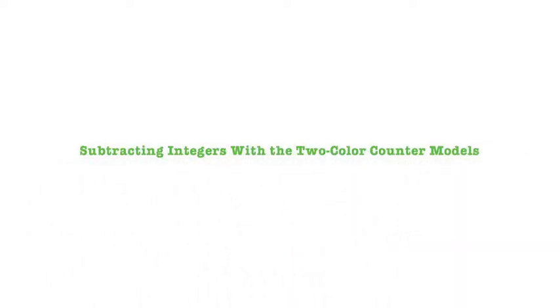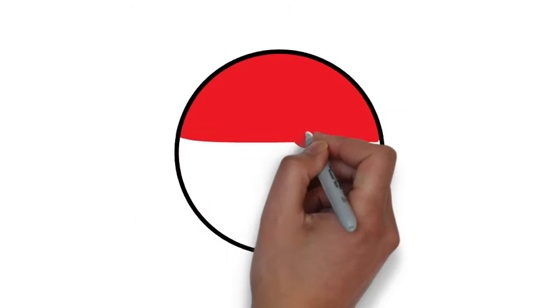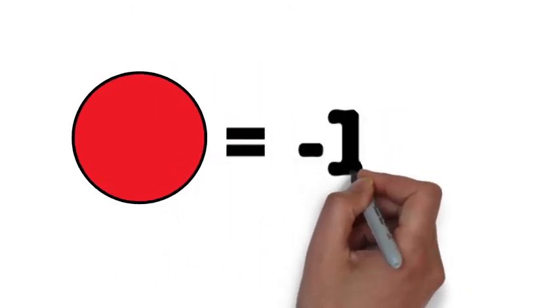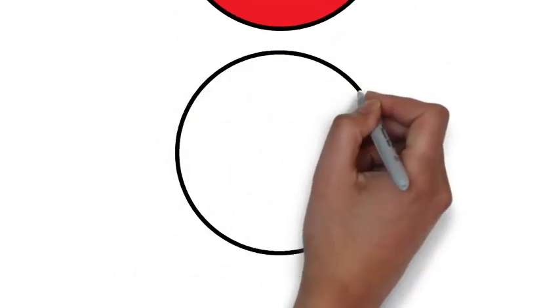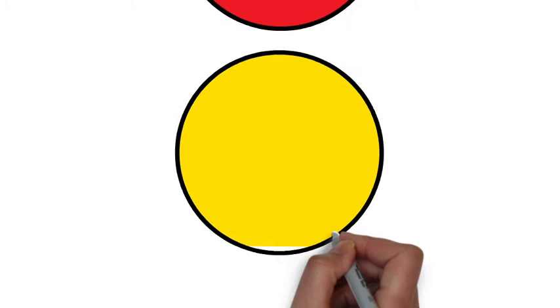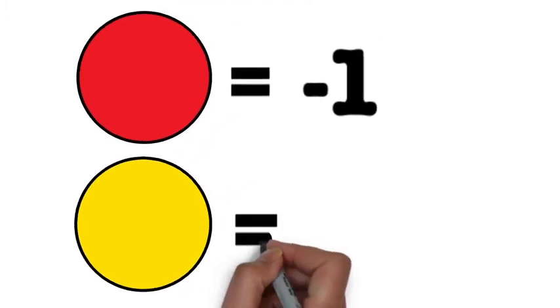Subtracting integers with the two-color counter model. Before we get started, let's revisit the two-color counter. Remember that the red side of a two-color counter represents negative 1, while the yellow side represents positive 1.